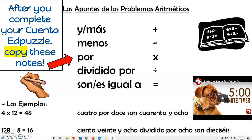When you're subtracting and you want to say minus, you say menos. Repitan: menos. Muy bien. When you want to say multiplied by, you just say por. So 2 times 2, for example, you would say dos por dos.